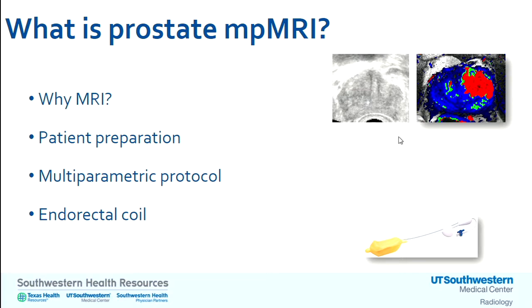Patient preparation for prostate MRI is not significantly different from a regular MRI of the pelvis, except for two things. One, we ask the patient to refrain from sexual activity for three days to maximize distension of the seminal vesicles, which helps us stage a tumor locally. Second, a fleet enema two hours before the exam so that a full rectum doesn't make the endorectal coil more uncomfortable.